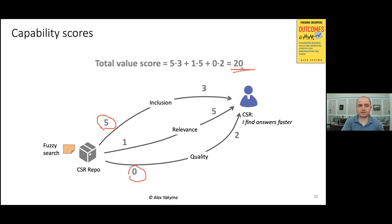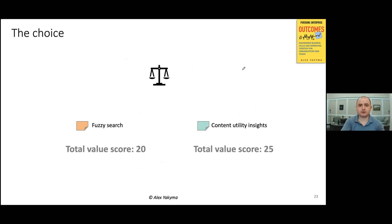And we do exact same thing for the next thing, for content utility insights. And here we have different capability scores, obviously. Now, content utility insights definitely changes the way we think about quality because this is a feedback mechanism back to the editors of the repository and they may improve the quality of the articles. And that's why it's two here. So, this value path is now enacted and so on. And we calculated the result and it's 25. Okay, now we can answer our question. We can compare the two and we may decide now which one to start with and deliver to the customer first.